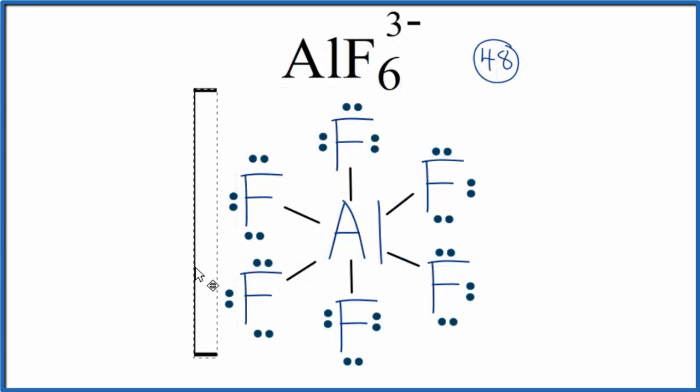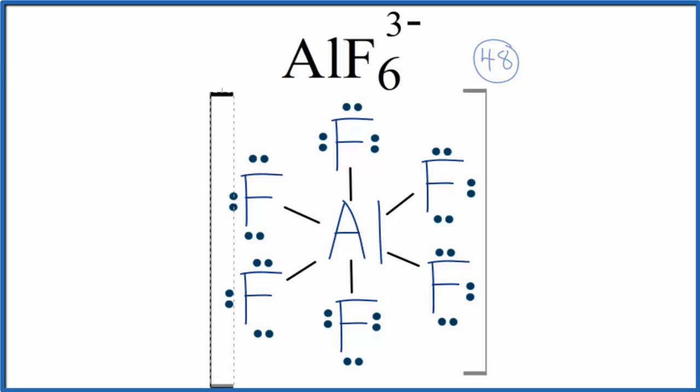Next, let's put brackets around the Lewis structure, since this is an ion, and then we'll put that charge, that 3- on the outside. So this is our Lewis structure.